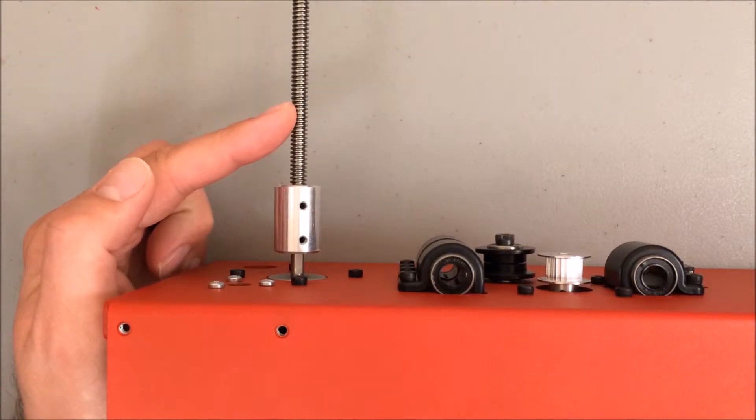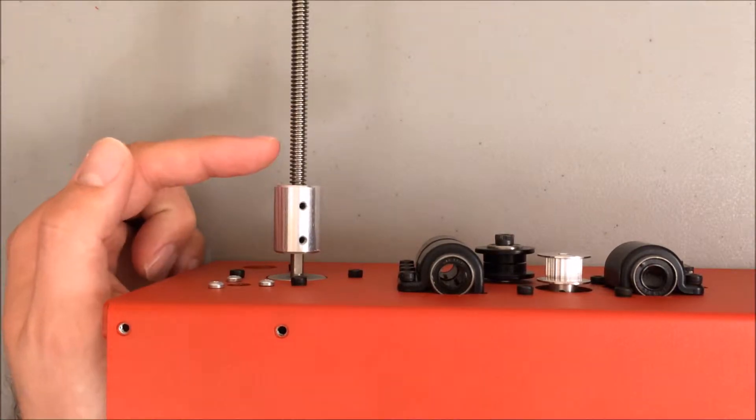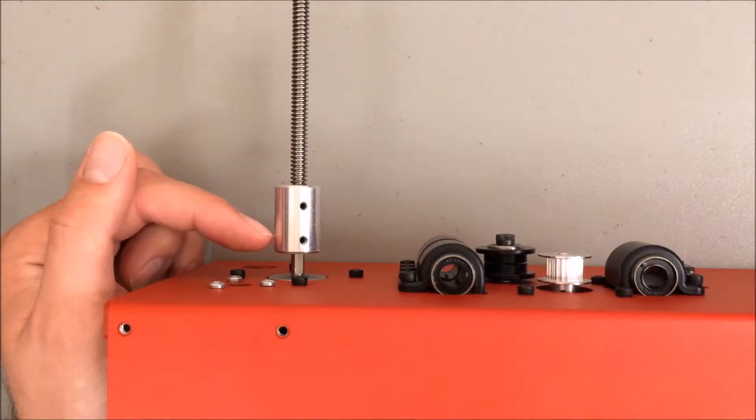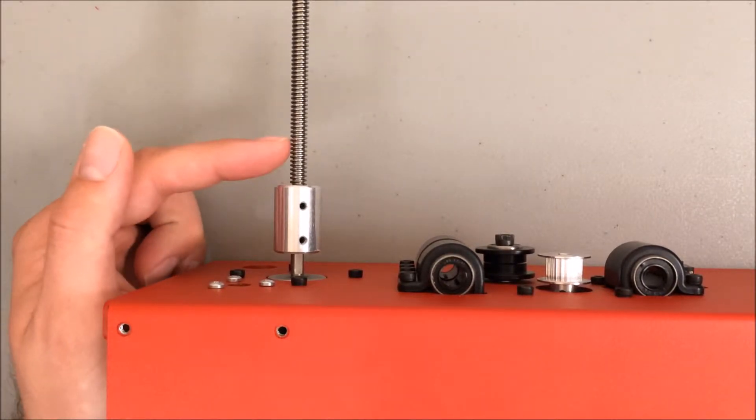Here's the coupler and Acme threaded rod that we're going to attach. The fun part about this step is that you have to carefully position this so that you grip both the motor and the threaded rod.